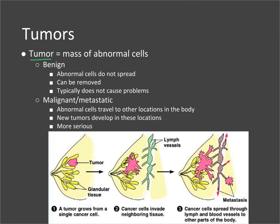There is a difference between a benign tumor and a malignant tumor. A benign tumor forms but does not break off and spread to other parts of the body — the abnormal cells typically stay where they are. They can usually be removed, though sometimes they're in areas where surgery would cause more damage than leaving them. They typically don't cause problems unless they grow too large and start interfering with blood supply or putting pressure on surrounding tissues.